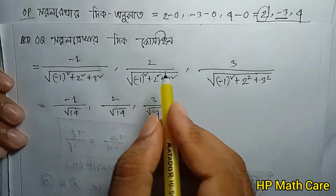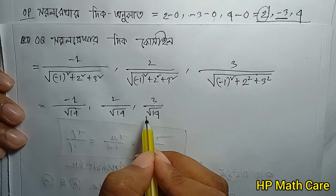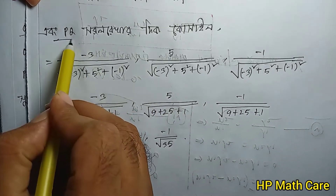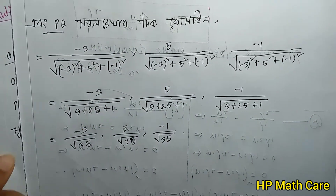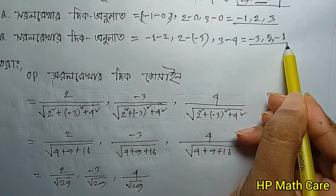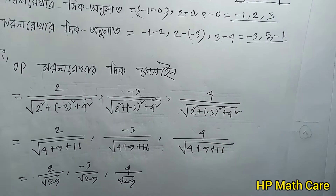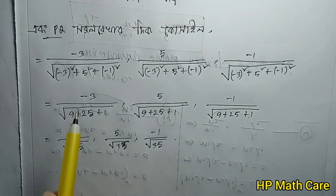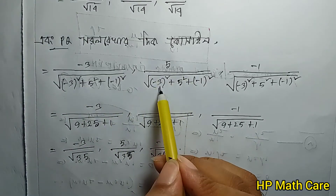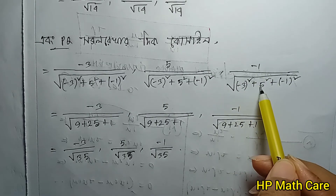Then okay, so for PQ, the direction ratios are (minus 3, 5, minus 1). Magnitude of PQ: square root of minus 3 squared plus 5 squared plus minus 1 squared. So 9 plus 25 plus 1 equals 35, root 35. Direction cosines of PQ are minus 3 over root 35, 5 over root 35, minus 1 over root 35.